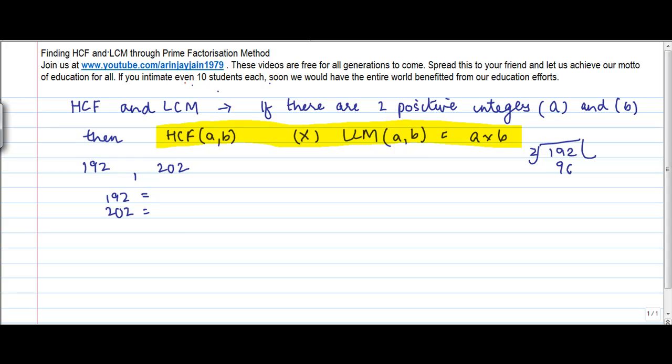So 192 can be written as 2 times 2 times 2... or 2 to the power 6 times 3.